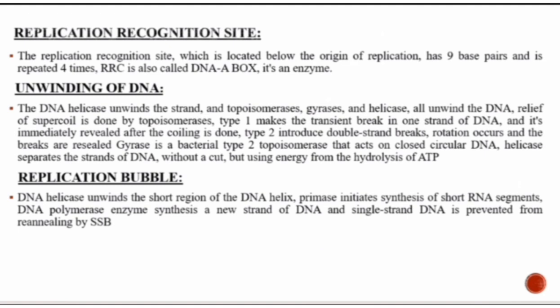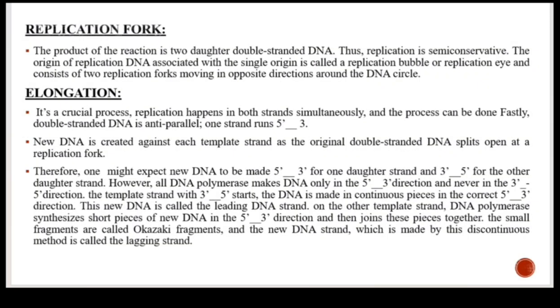Replication bubble and fork. DNA helicase unwinds a short region of the DNA helix, creating a replication fork. Primase initiates synthesis of short RNA segments before new DNA strands can be synthesized, adding short RNA primers to the separated strands. DNA polymerase then synthesizes a new strand by adding nucleotides to the RNA primers. Single-strand binding proteins bind to the single-stranded DNA regions to prevent re-annealing. The origin of replication forms a replication bubble consisting of two replication forks moving in opposite directions.